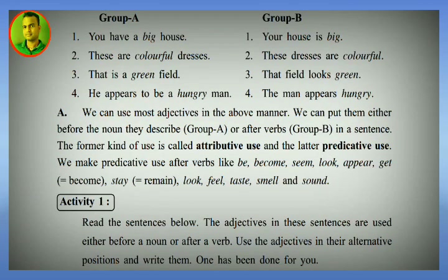Adjectives can also be placed after verbs in a sentence — as in Group B. The former kind is called attributive use (Group A), and the latter is called predicative use (Group B).